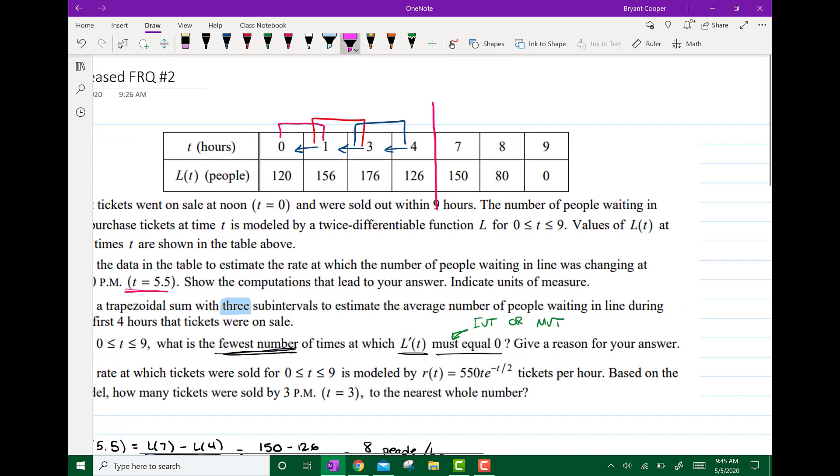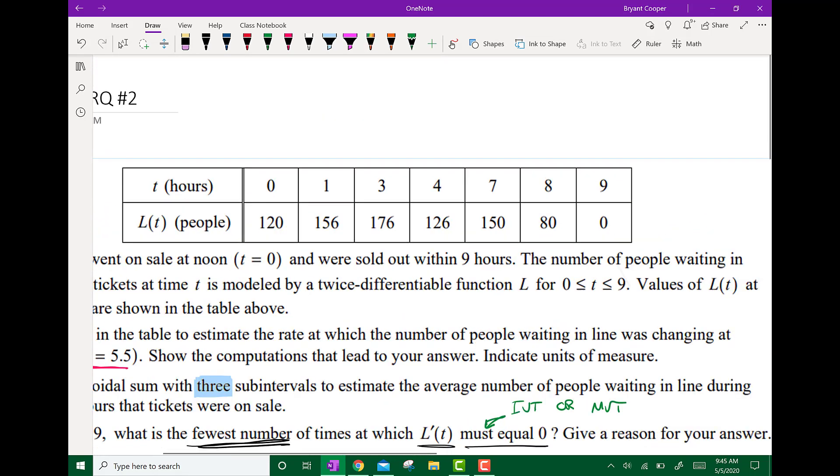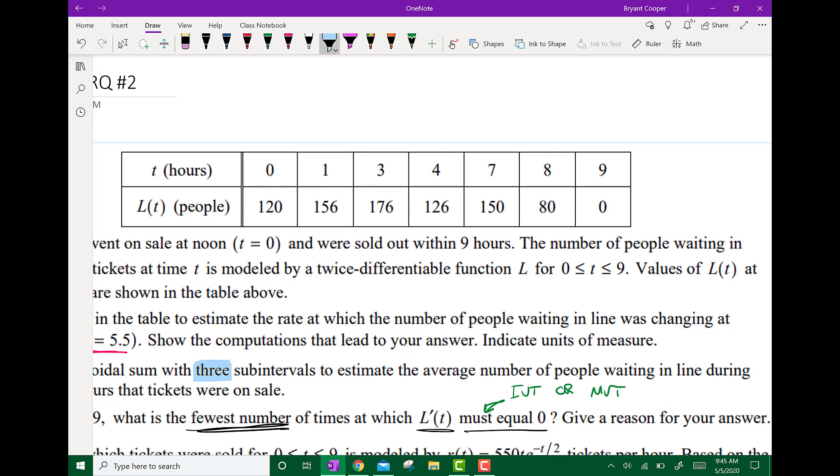So if I go up to my chart between 0 and 9, I know that I'm going to be increasing from 0 to 176 because it's going up. Then I start decreasing from 176 to 126. And then it starts increasing again from 126 to 150 and then 150 to 0.